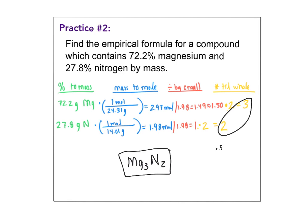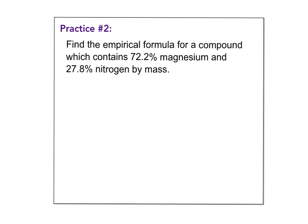When multiplying till whole: if something ends in 0.5, multiply by 2; if it ends in 0.33, multiply by 3. Those are really the only cases we focus on. If we had 0.25, we'd multiply by 4, but that's a rare step.